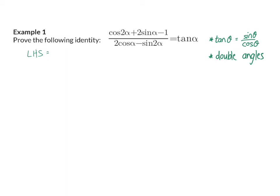On our left, we can see that we have two functions that have double angles: sin 2α and cos 2α. I'm going to start off changing the sin 2α because it only has one option of identity to use. For sin 2α, the identity is 2 sin α cos α.